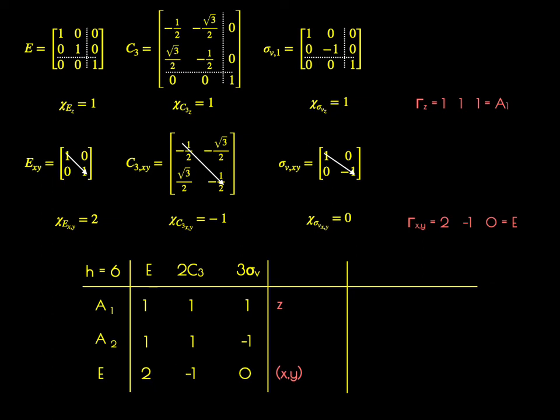This brings up something important. For the X and Y vectors, in that 2×2 matrix we have non-zero off-diagonal elements. This means that when you perform these operations, you get a mixture of X and Y. This tells you that under C3V symmetry, X and Y are inherently linked together and cannot be considered separately. Because they're inherently linked, they must be considered as a pair, and in the character table they are presented with parentheses around them.